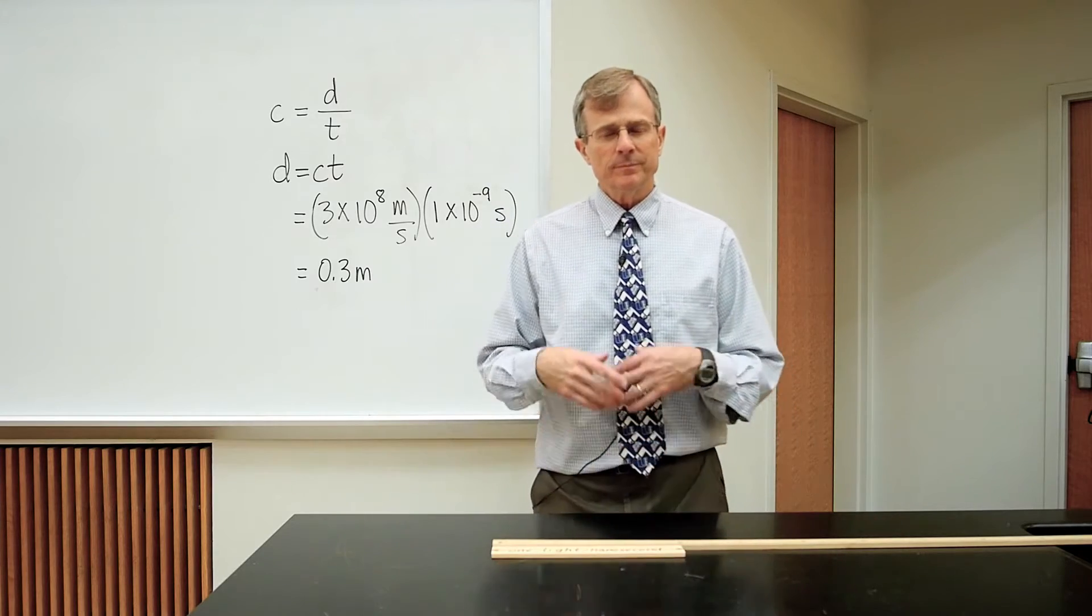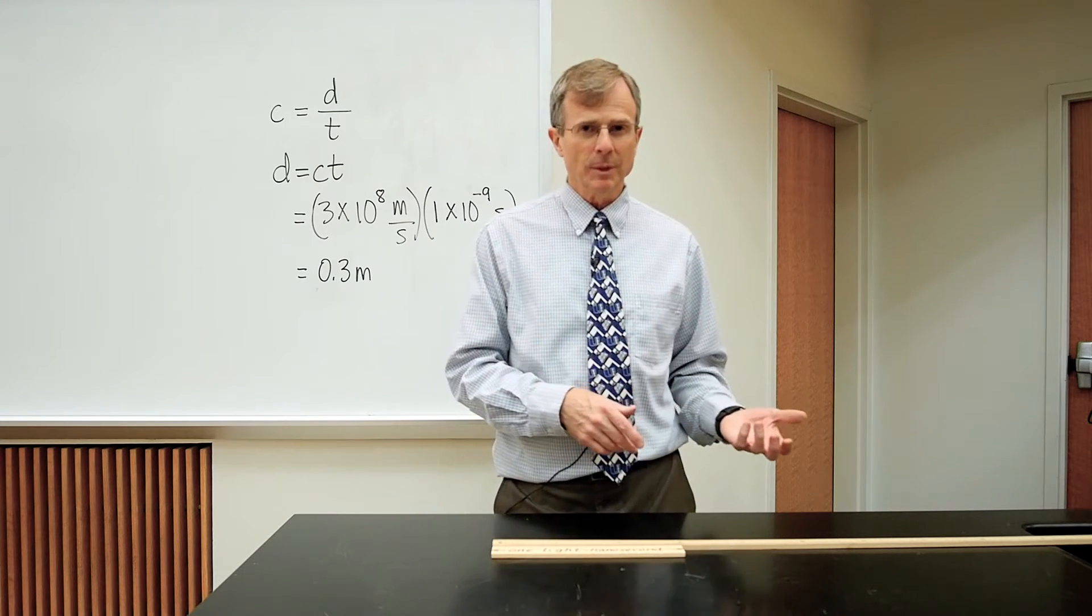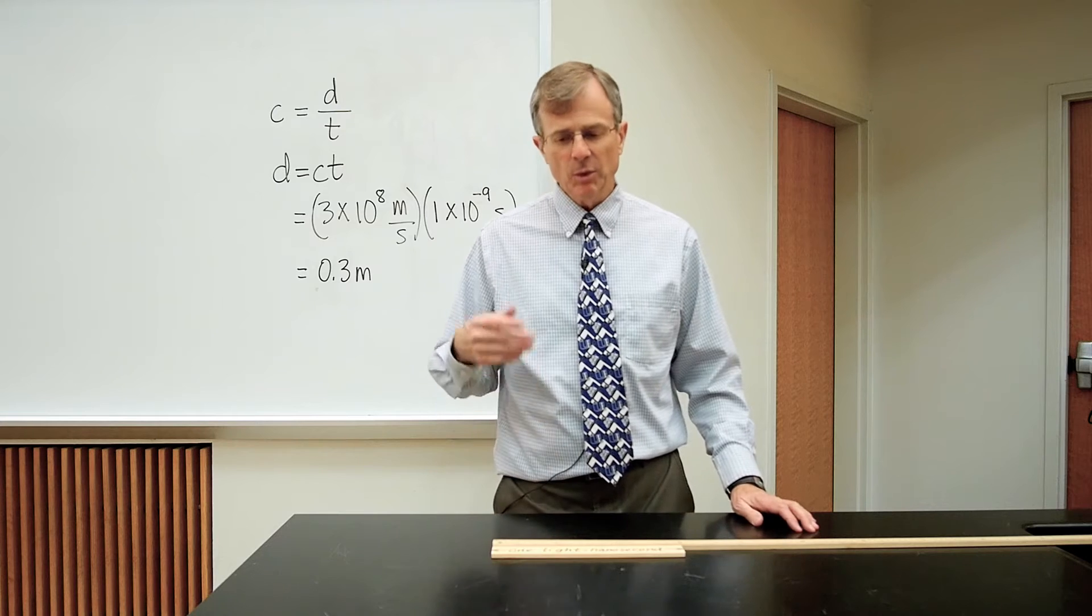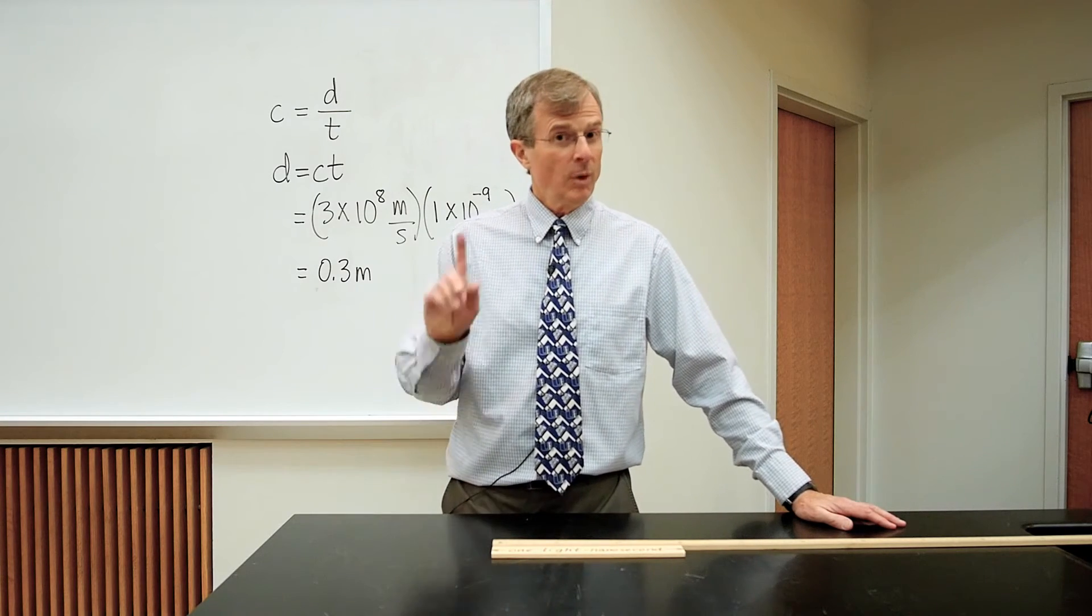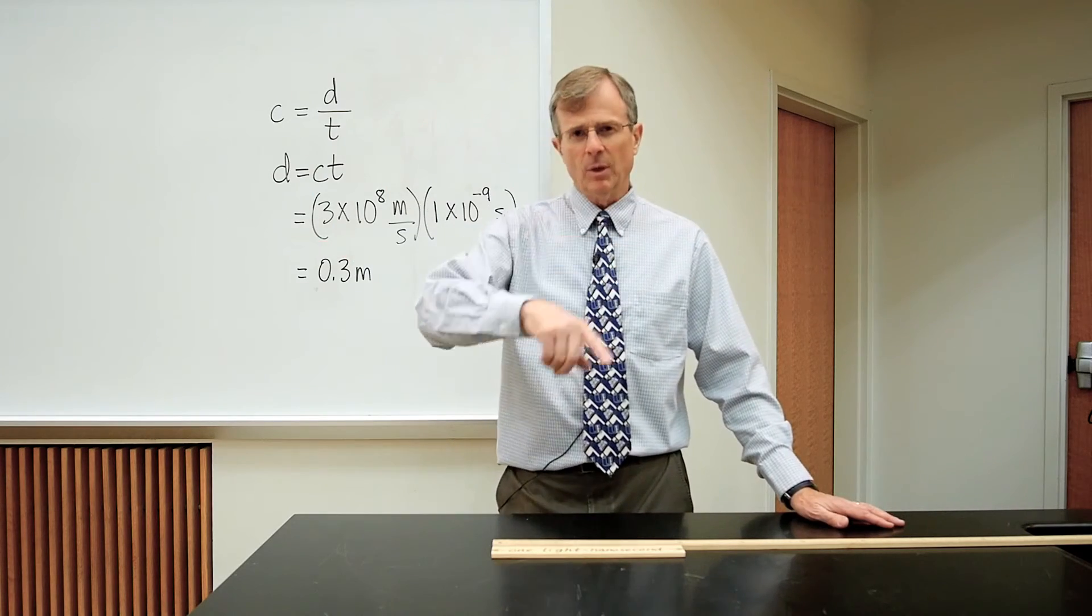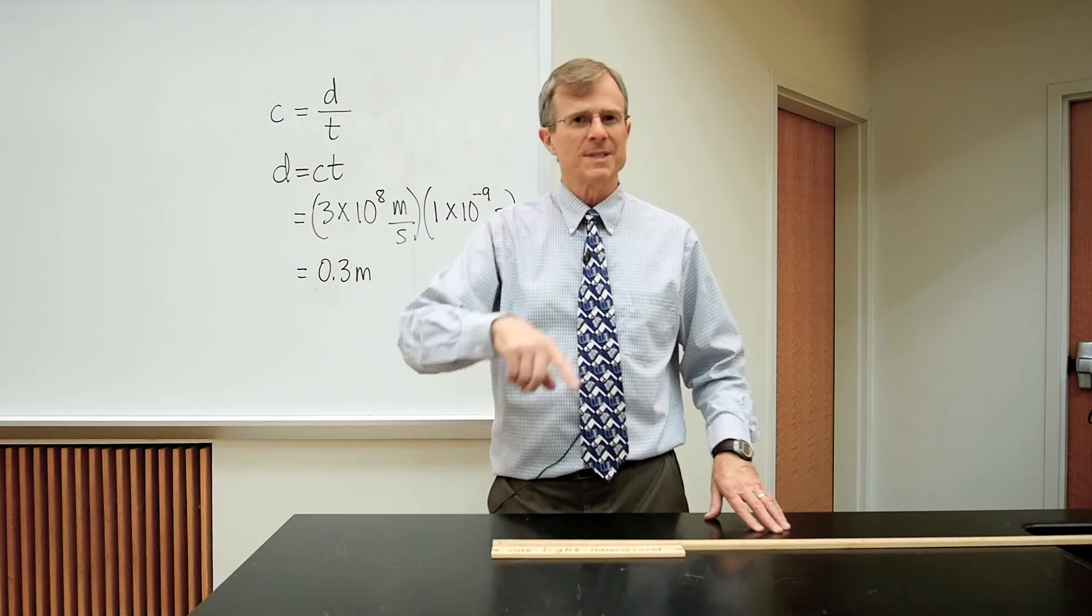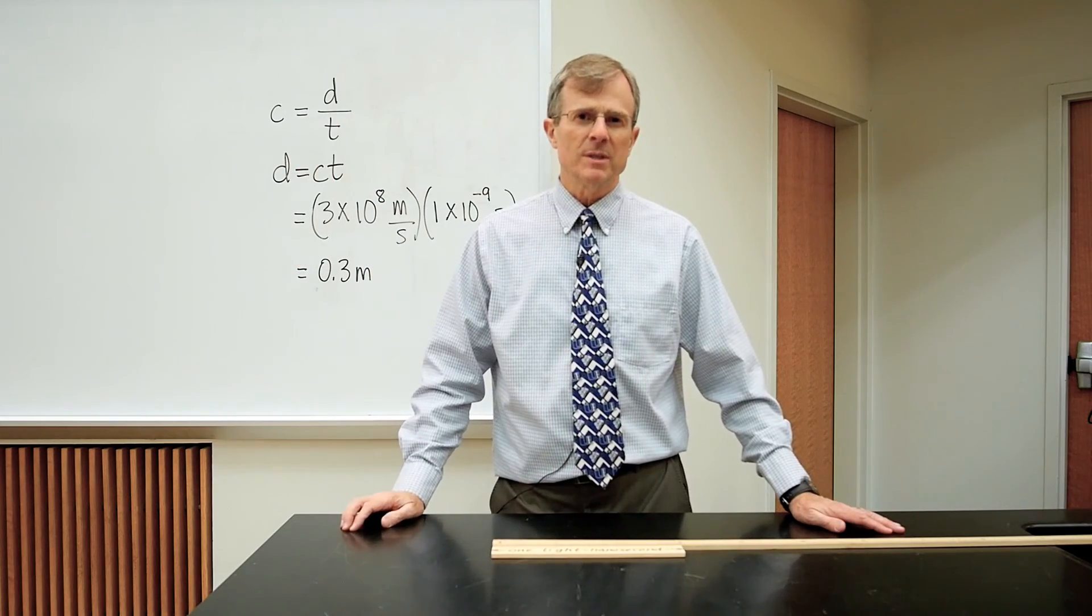But if you take it up to length and up to scales which we're a little bit more familiar, and you look at how far light travels in 1 second, then you can easily work out that the light will go around, if you had enough mirrors, the light would go around the world 7 times in 1 second.